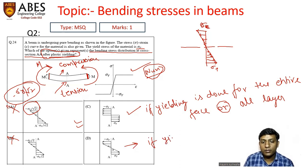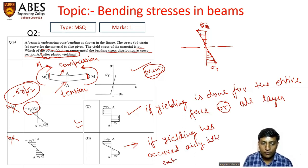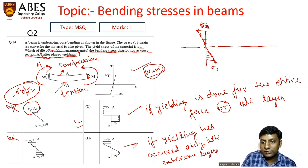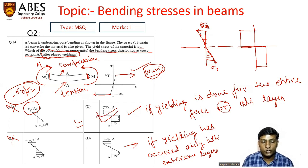If yielding has occurred only in the extreme layers. So if all the layers have gone up to the yielding point, then the yielding stress will be present over the entire phase because here you can see the yielding stress is constant. So this is a true option.